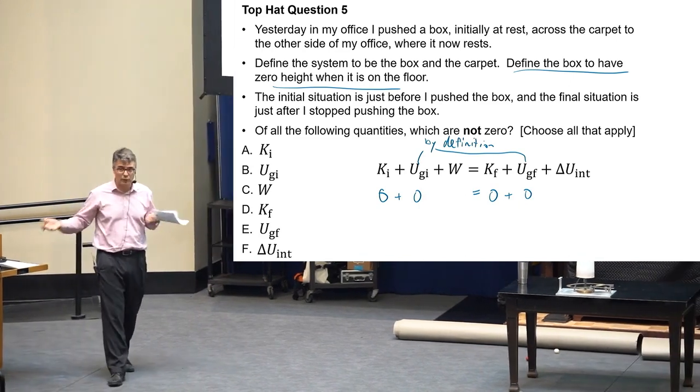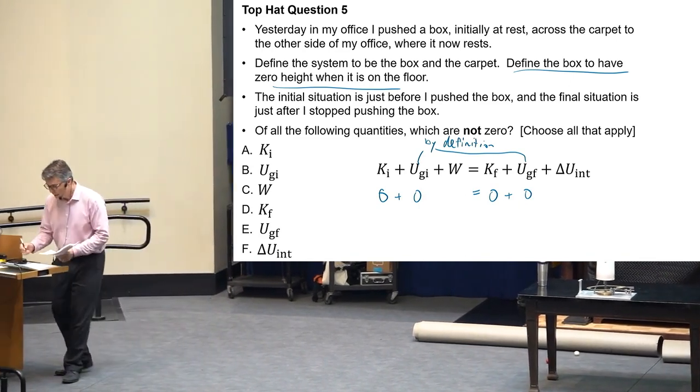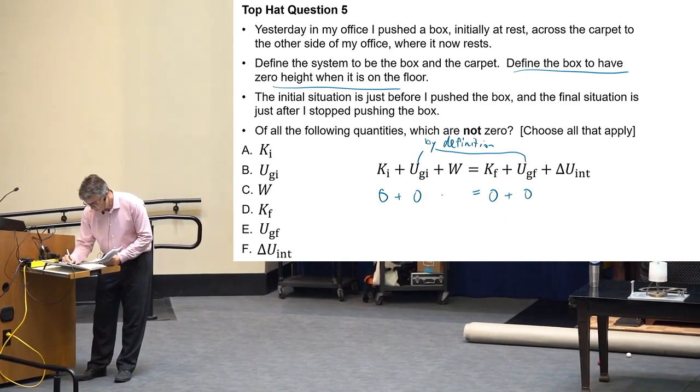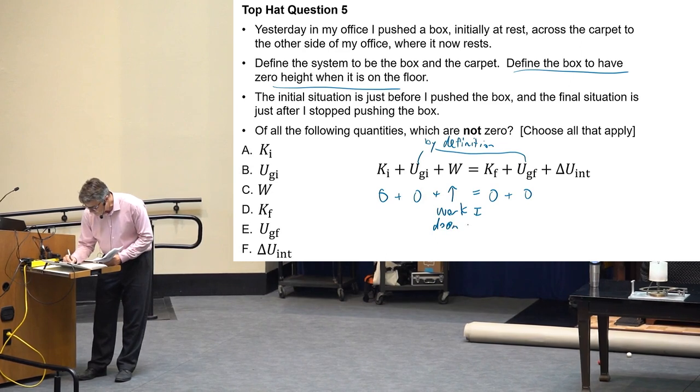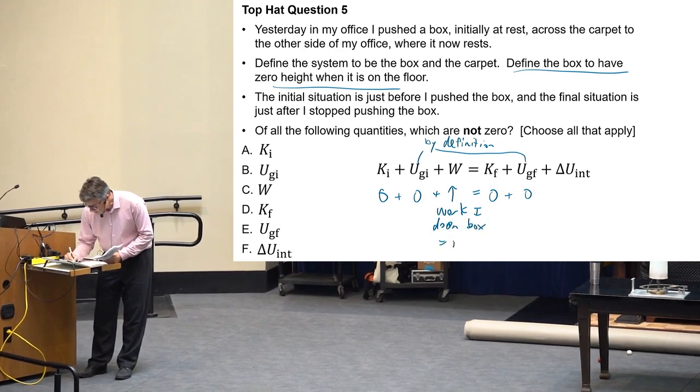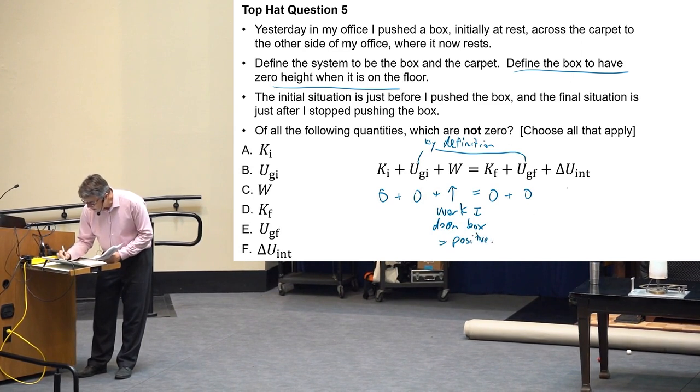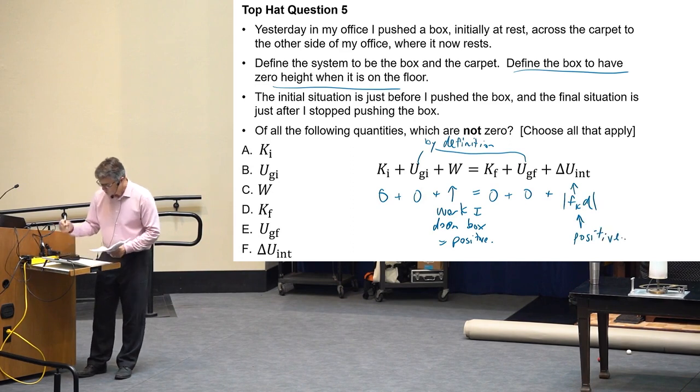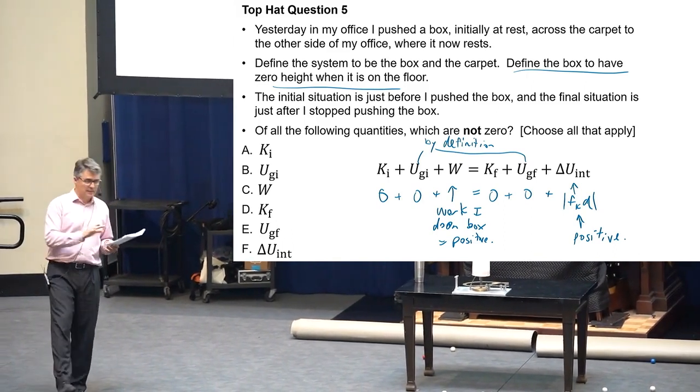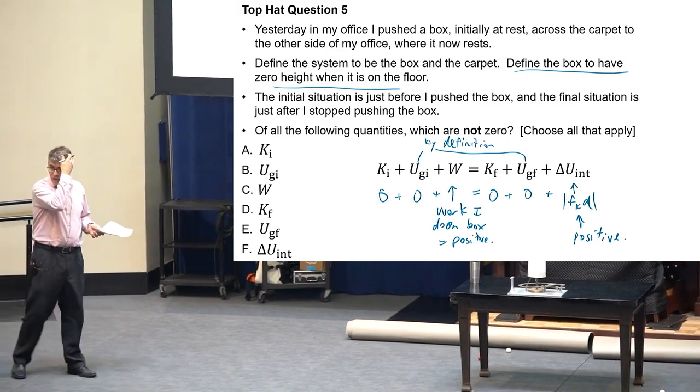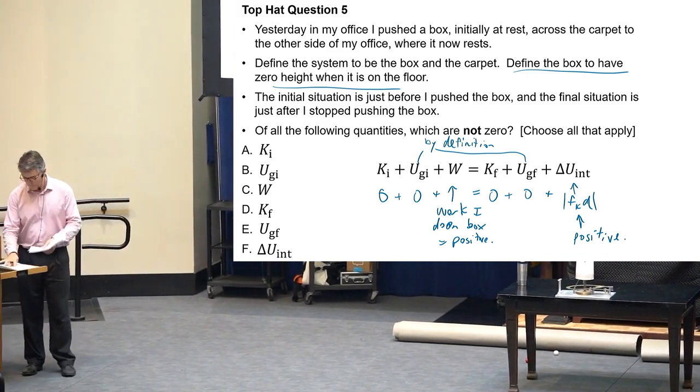Of all the following quantities which are not zero? So it starts at rest so initial kinetic energy is zero. It ends at rest so final kinetic energy is zero. It doesn't change its height so if you define the box to have zero height when it's on the floor, then this is zero and this is zero. Just by definition. Okay, this is by definition. You can set the zero height of gravitational potential energy to be wherever you want, so I'm going to set it to be the floor. So what happens is that I do some positive work. This is the work I do on the box because I am an external force. And that's positive work on the box.